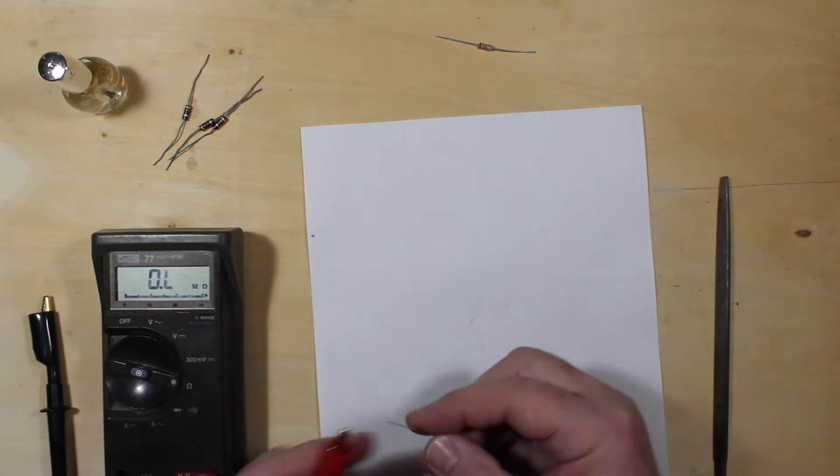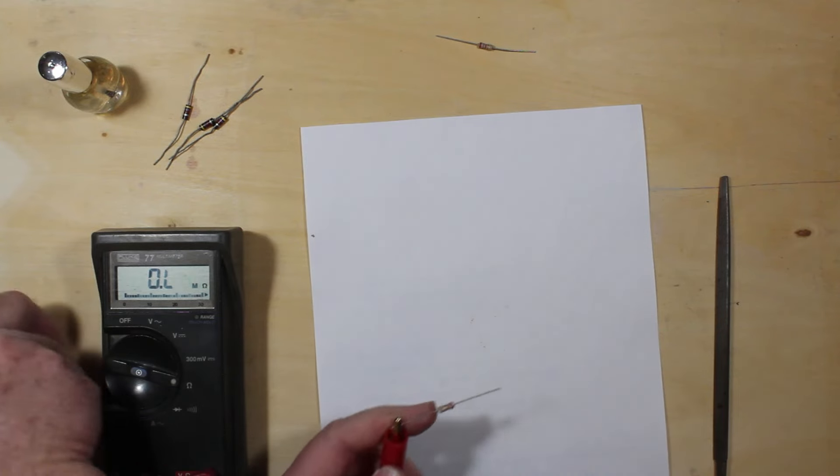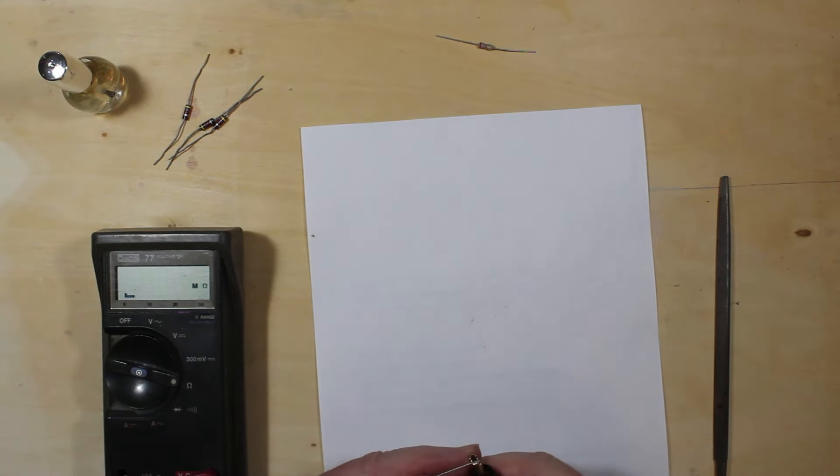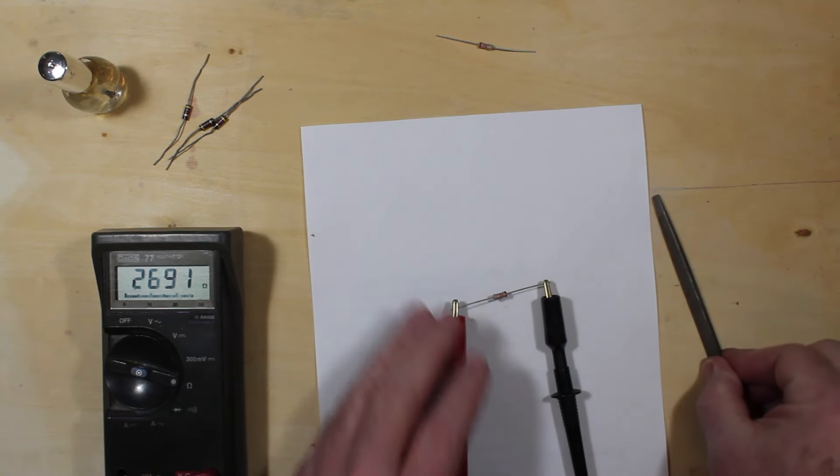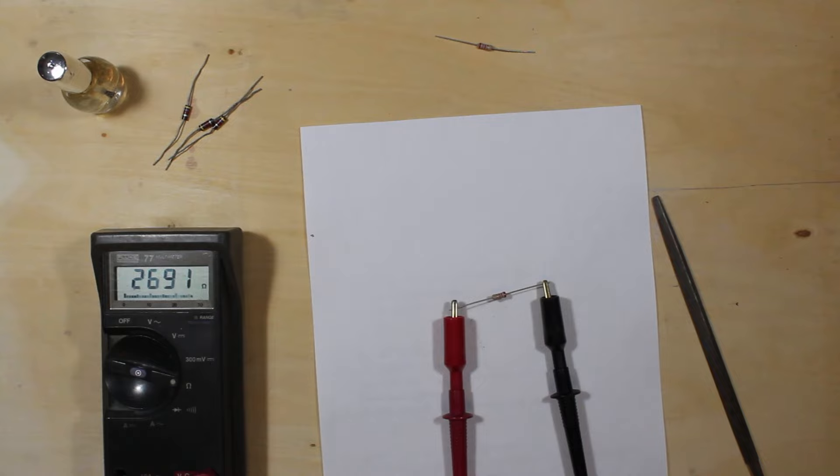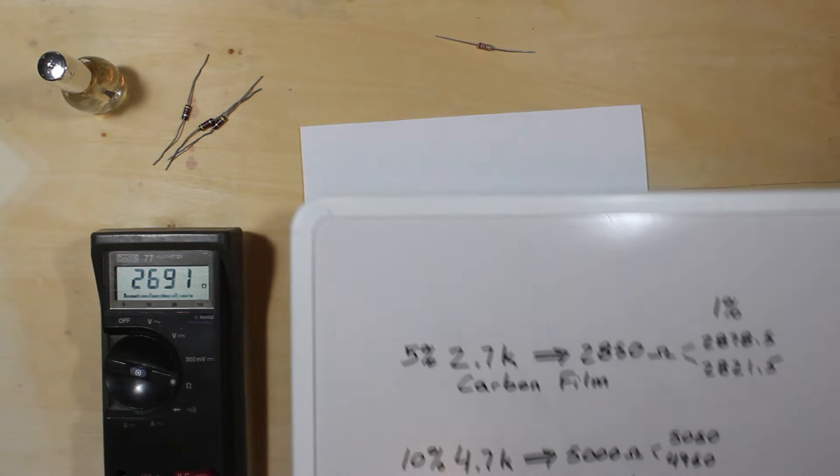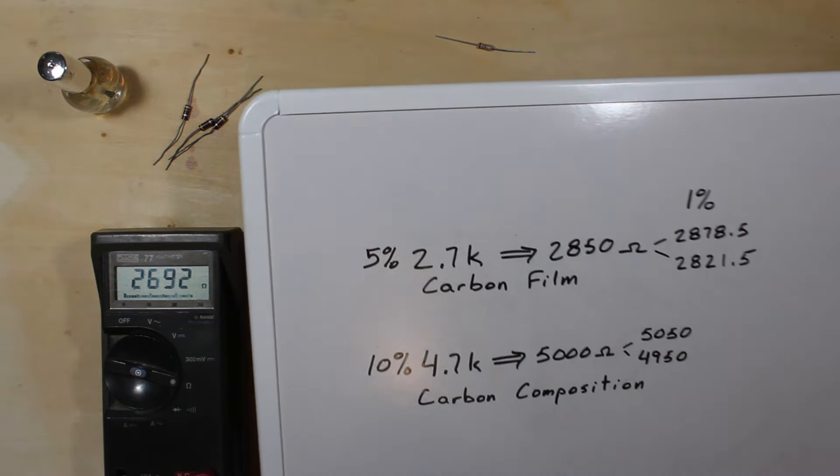So we're going to take our 2700 ohm resistor here, we're going to clip it into our test leads here and we'll see what it actually says it is right now. That's pretty close to 2700 but what we're looking for is 2850 and here's what it looks like what we're shooting for.